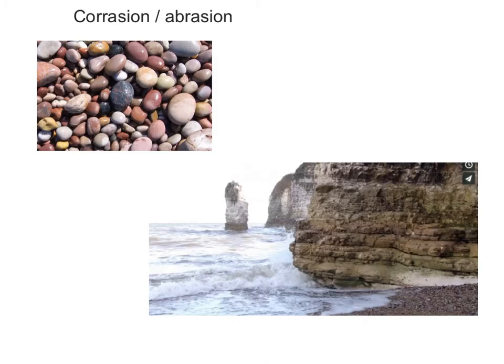The next process is corrasion or abrasion. This is about the waves picking up beach material — pebbles and small boulders — as the swash comes into the cliff face. The waves pick up this material and smash it against the cliff face. This happens mostly at high tide when the waves have the most power and energy to collect the pebbles. It acts as a scraping or gouging effect on the cliff rock itself.